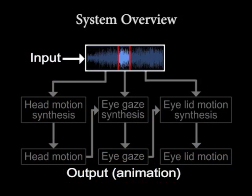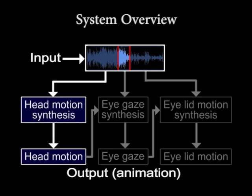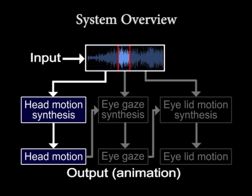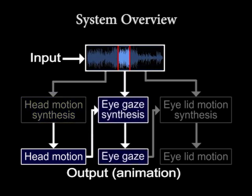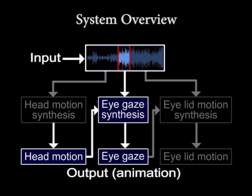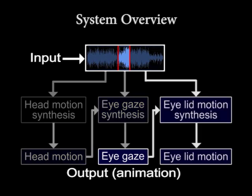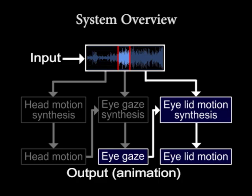Our synthesis algorithm works at the frame level. For each time frame, we first synthesize head motions from the prosody features of live speech. Then, from the synthesized head motions and speech loudness, we generate the eye gaze motion. Finally, we generate eyelid movement from the eye gaze and speech loudness.